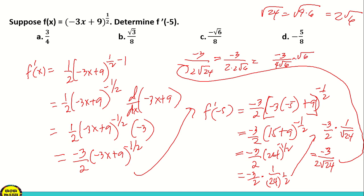Since we have a radical in the denominator, we multiply both numerator and denominator by square root of 6. This gives negative 3 square root of 6 over 4 times 6, which is negative 3 square root of 6 over 24. Simplifying 3 over 24 to lowest terms gives 1 over 8. So the answer is negative square root of 6 over 8. That is letter C.